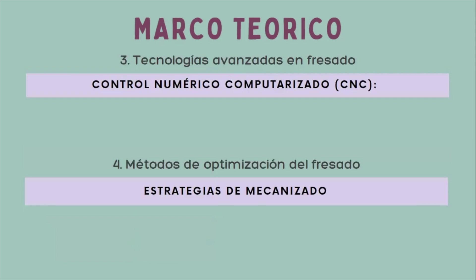Como tercer tema está la tecnología avanzada en fresado. Esto se centra básicamente en el control numérico computarizado o CNC. Este tuvo un impacto revolucionario en el proceso del fresado al permitir un control preciso y flexible de la máquina. Antes de la llegada del CNC, el fresado se realizaba manualmente, lo que limitaba la precisión y la consistencia de las piezas mecanizadas. Con el CNC, las fresadoras pueden controlarse mediante instrucciones programadas en un software de computadora, mejorando significativamente la precisión, la eficiencia y la consistencia del proceso mecanizado.